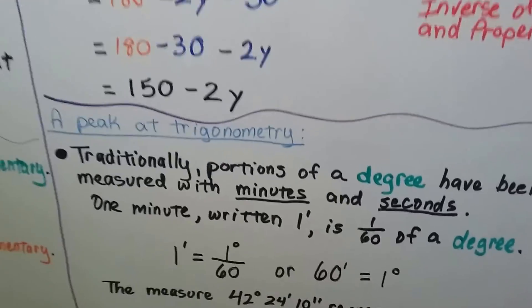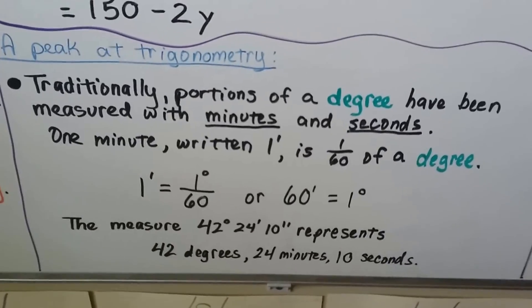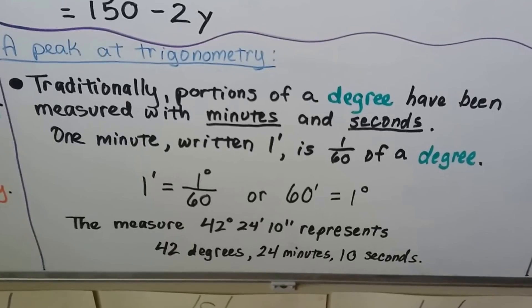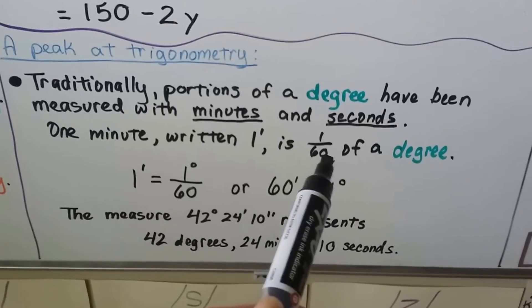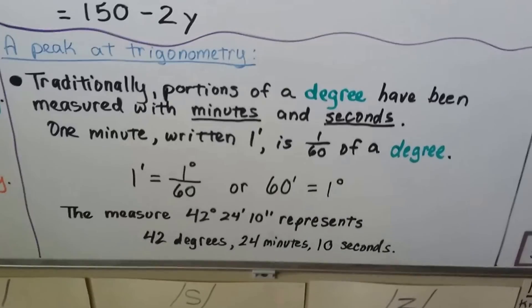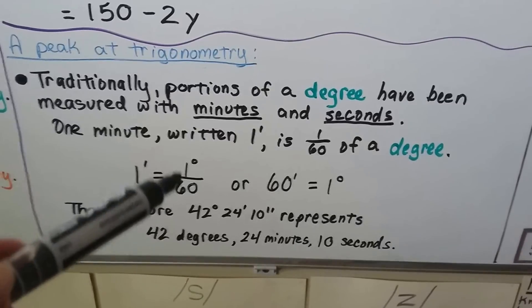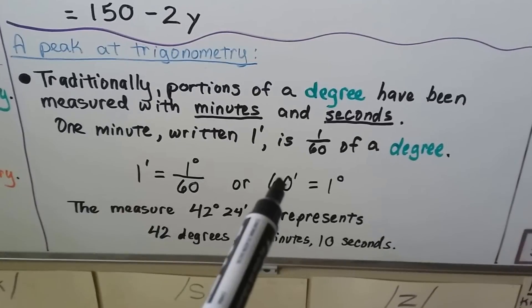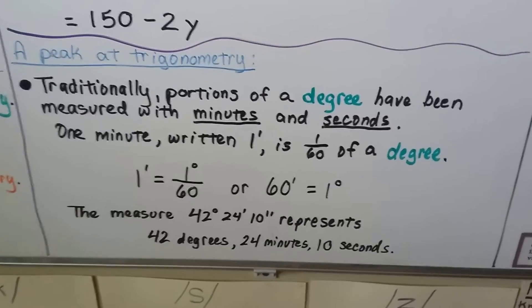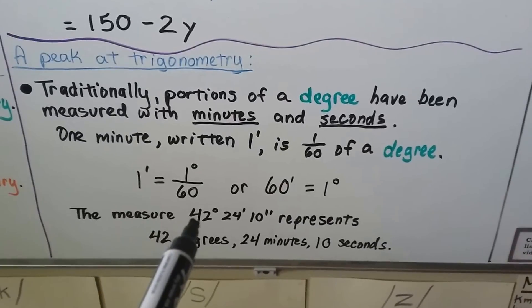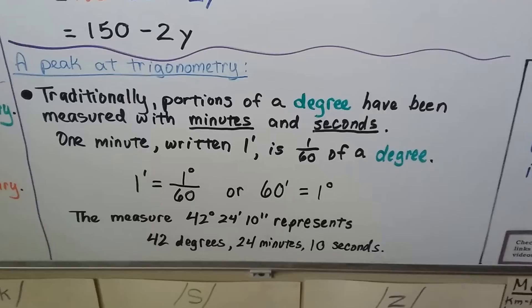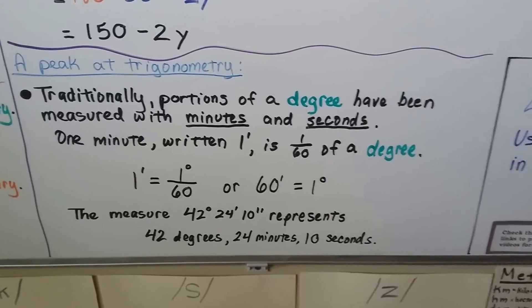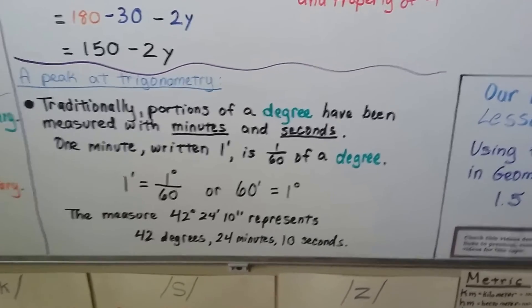Here's a little peek at trigonometry: traditionally, portions of a degree are measured with minutes and seconds. One minute, written with a tick mark, is 1/60th of a degree — so 60 minutes equals 1 degree. For example, 42 degrees 24 minutes 10 seconds is how you would read that notation.